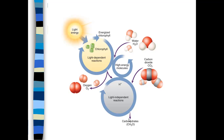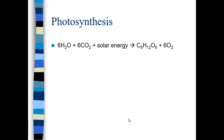This is the empirical formula for glucose. The carbohydrates like glucose leave the light-independent reactions and can go all over the plant to facilitate its physiology. Here's the overall chemical reaction: we have six waters plus six carbon dioxides combined with solar energy captured in chlorophyll.